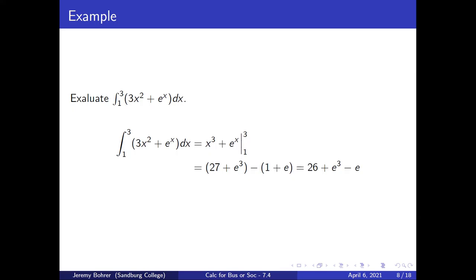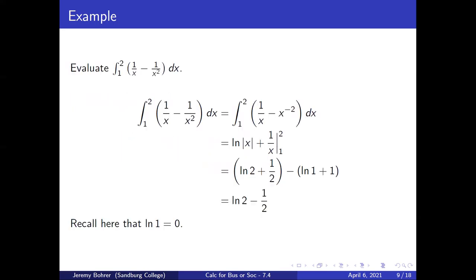Evaluate the integral from one to three of (3x² + eˣ) dx. The integral from one to three of (3x² + eˣ) dx equals x³ + eˣ evaluated between one and three, which is (27 + e³) minus (1 + e), which equals 26 + e³ − e.